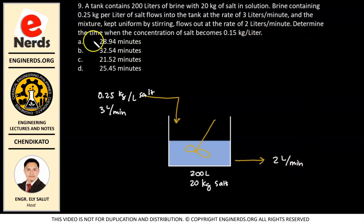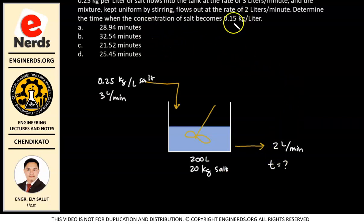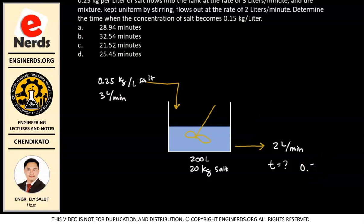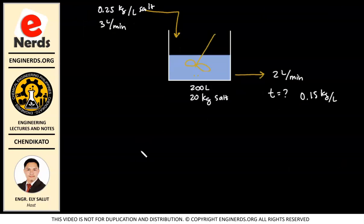We need to determine the time when the concentration of the salt becomes 0.15 kilograms per liter. So the required value is time — what is the time required so that our concentration will become 0.15 kilogram per liter? Now we have our illustration, so we can start solving our problem.